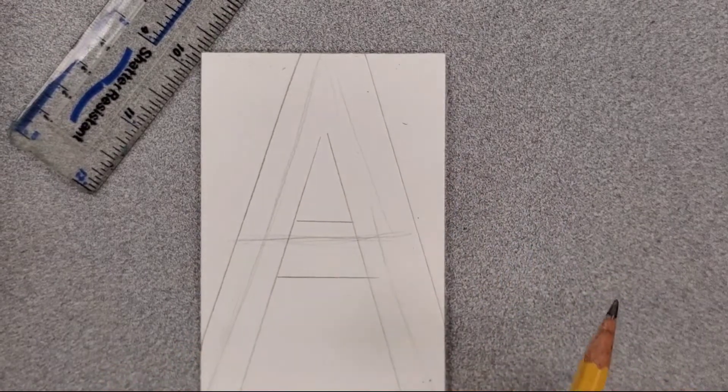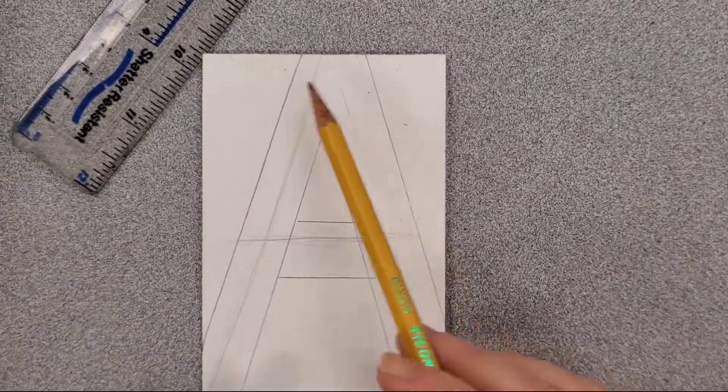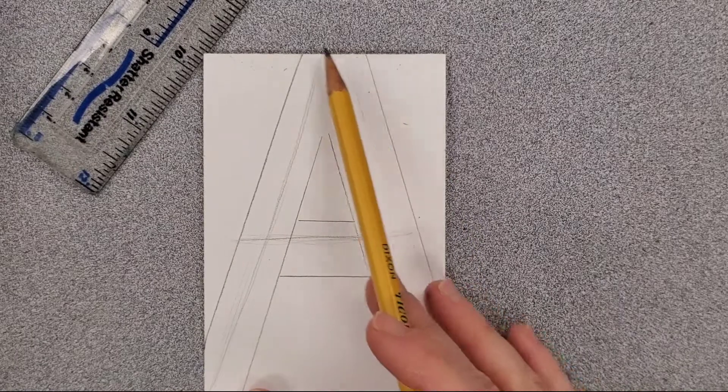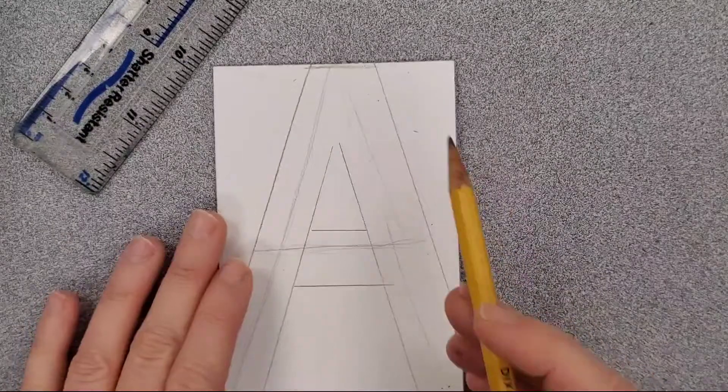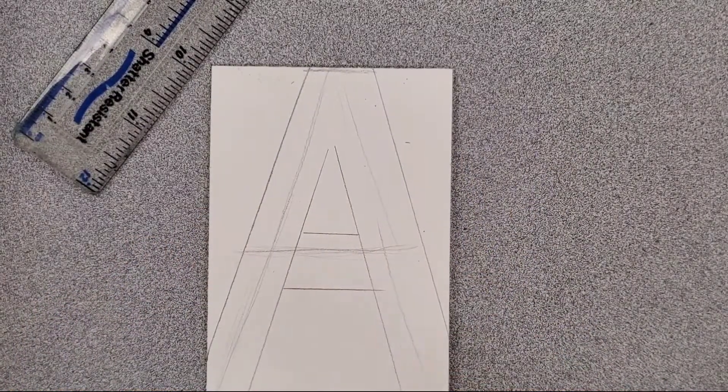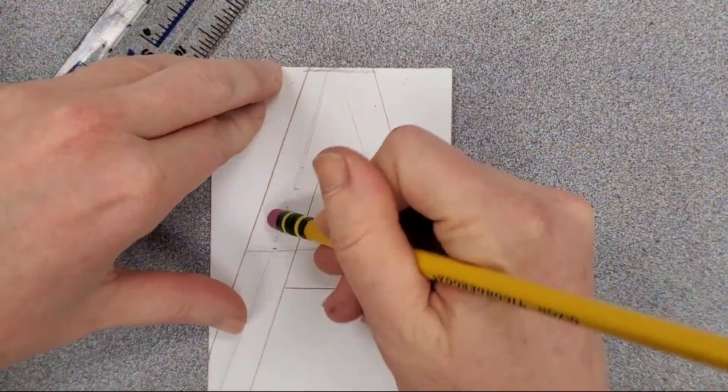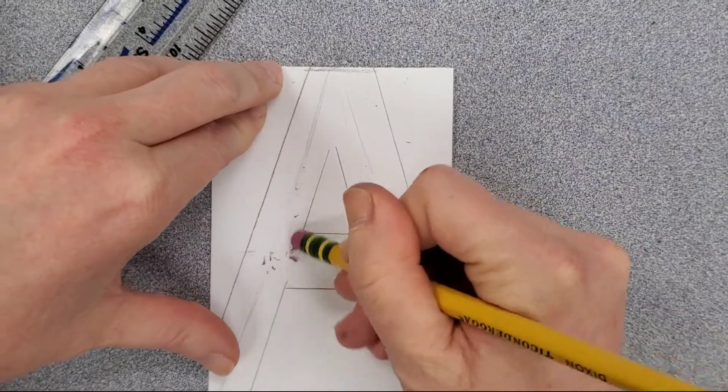Now before I judge this block letter that I've done, I know that I've used a ruler, I know it touches top, bottom, side to side, I know it uses the straightaways of the ruler. So what I'm going to do now is erase my skeleton and then just check for overall evenness of my letter.